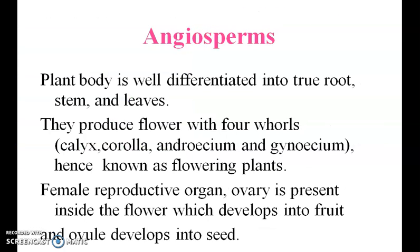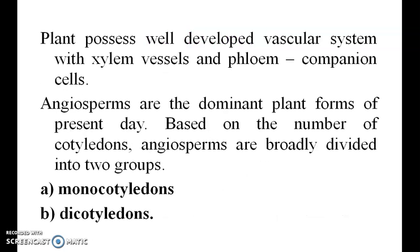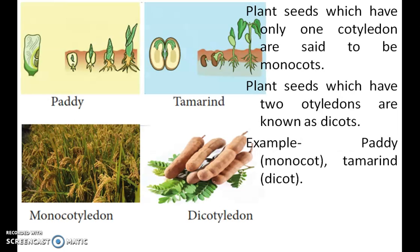The plant body is well differentiated into true roots, stems, and leaves. They produce flowers with four whorls: androecium, gynoecium, and corolla — hence they are known as flowering plants. The female reproductive organ, the ovary, is present inside the flower and develops into fruit. Plants possess a well-developed vascular system with xylem vessels and phloem companion cells. Angiosperms are the dominant plant forms of the present day. Based on the number of cotyledons, angiosperms are broadly divided into two groups: monocotyledons and dicotyledons. Plants with one cotyledon are monocots; those with two cotyledons are dicots.